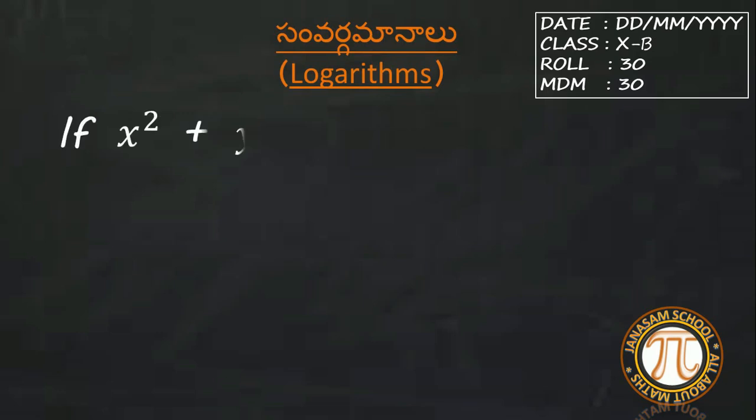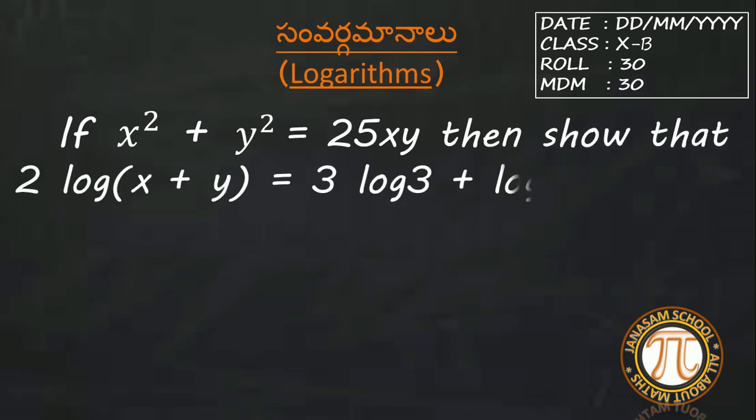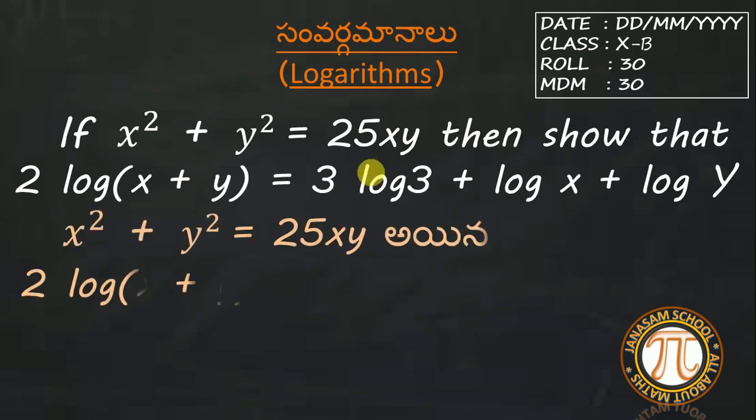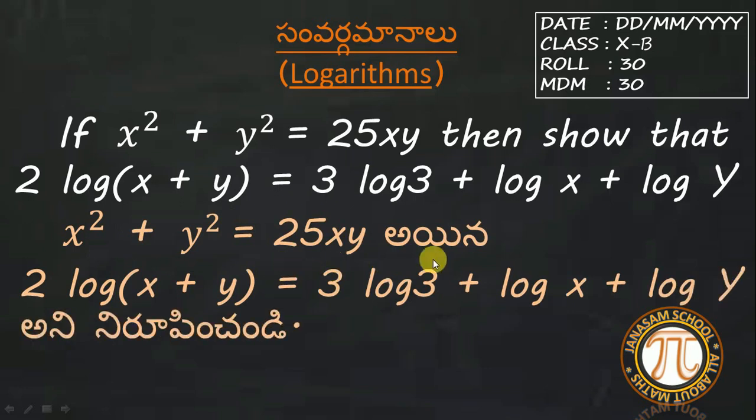If x² + y² = 25xy, then show that 2 log(x + y) = 3 log 3 + log x + log y. So x² + y² equals 25xy, then 2 log(x + y) equals 3 log 3 + log x + log y.